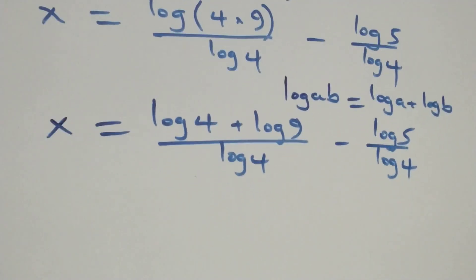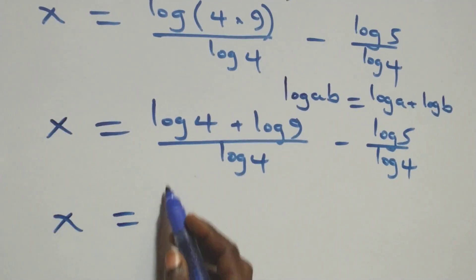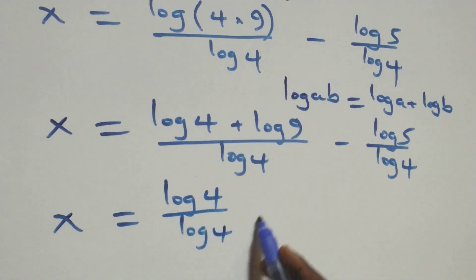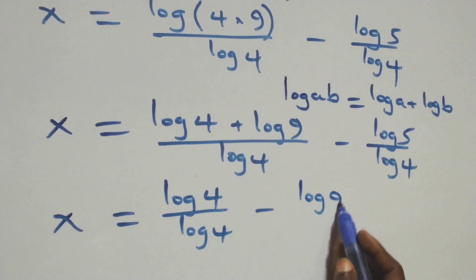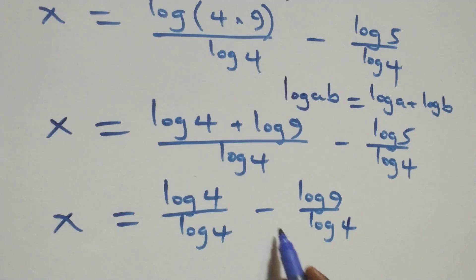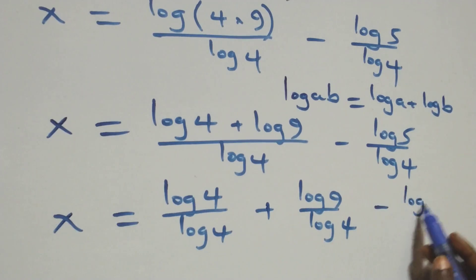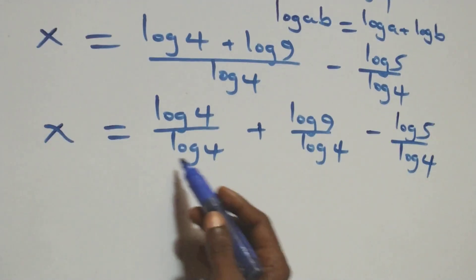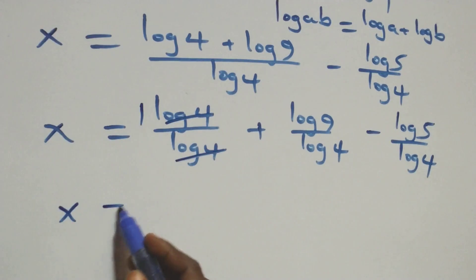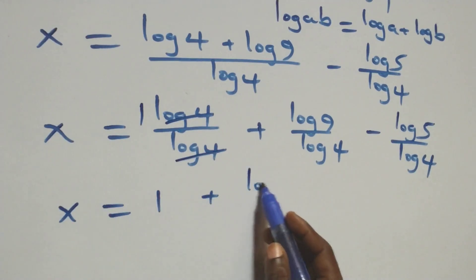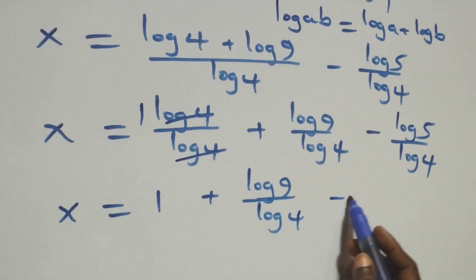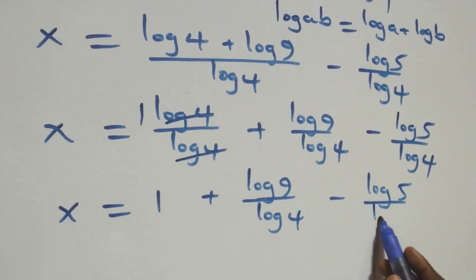The next step: we separate this into two fractions. We have x equals log 4 over log 4 plus log 9 over log 4, minus log 5 over log 4. Log 4 cancels each other on the first term, leaving x equals 1 plus log 9 over log 4, minus log 5 over log 4.